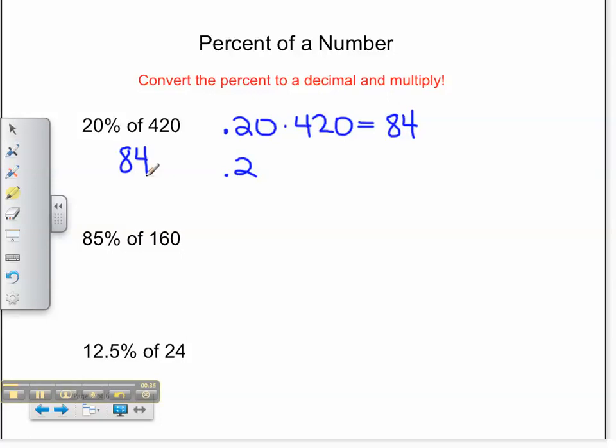Let's look at our next problem, 85% of 160. We'll write 85% as a decimal, which is 85 one-hundredths, times 160 equals 136. We then know that 85% of 160 is 136.